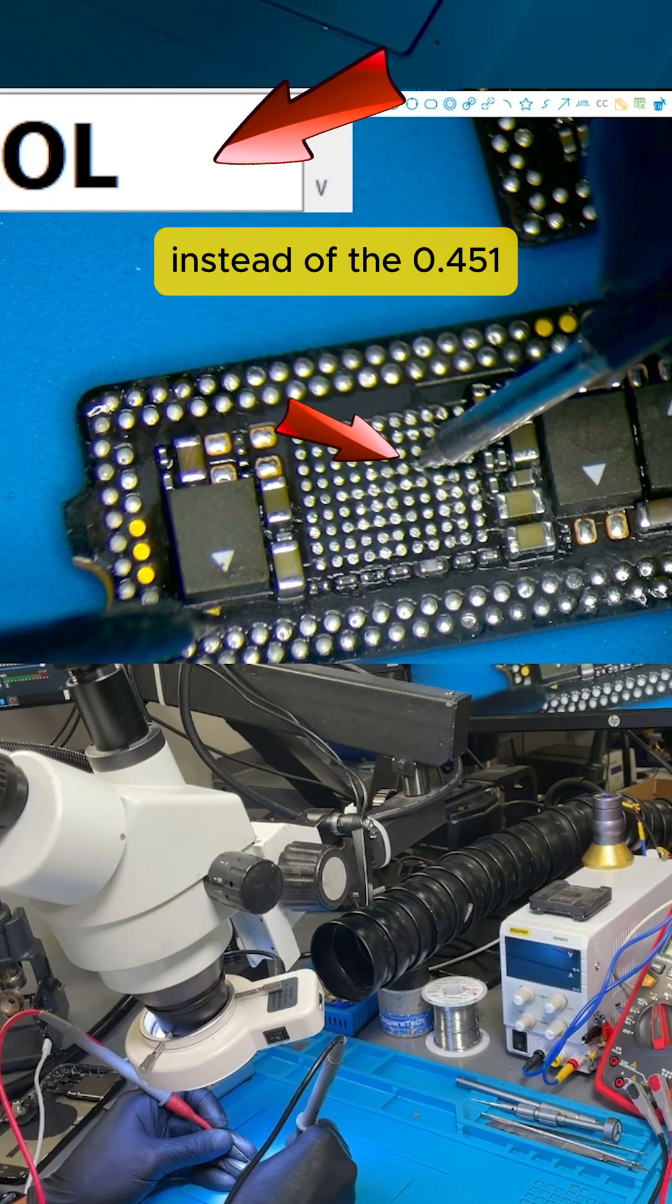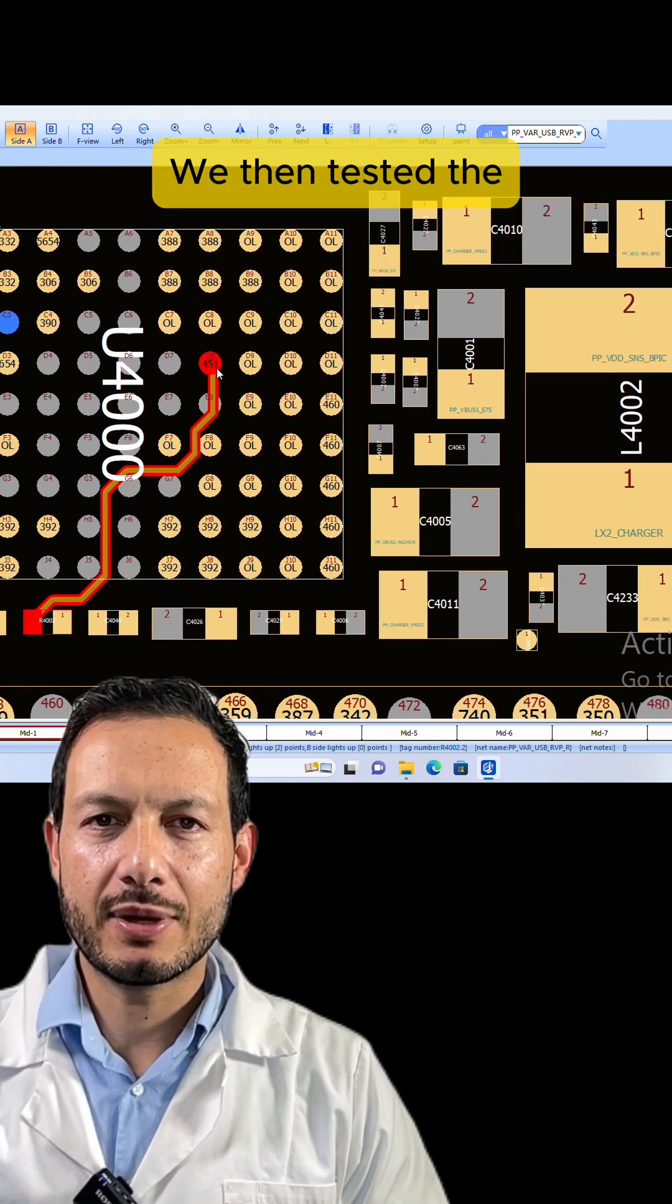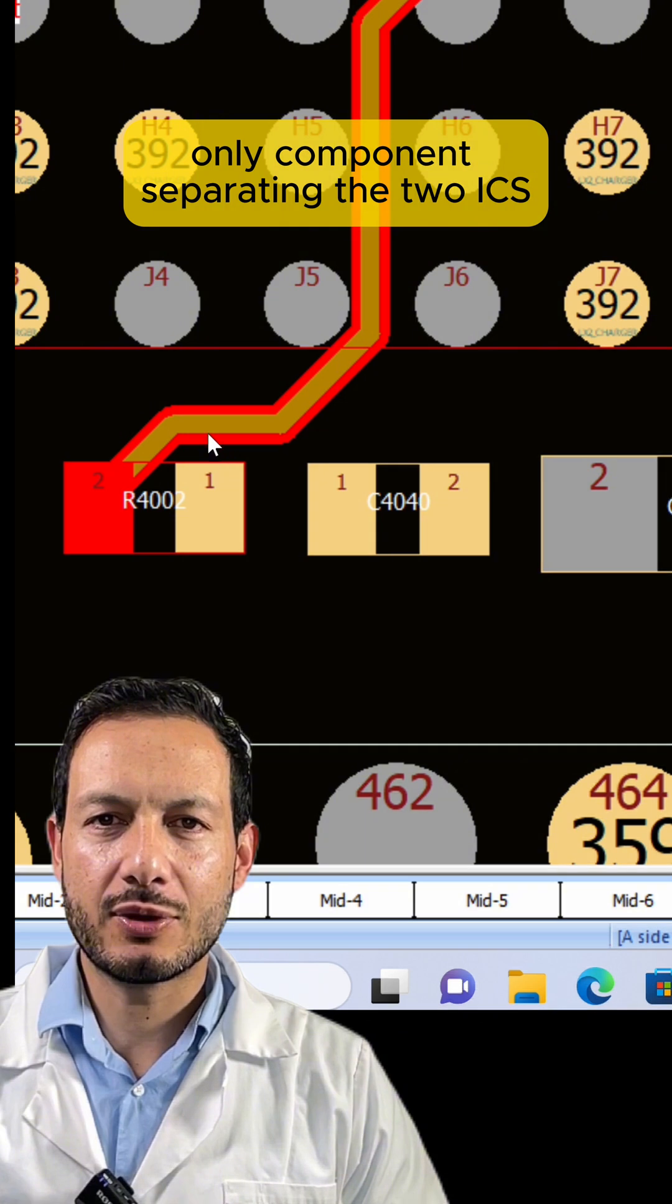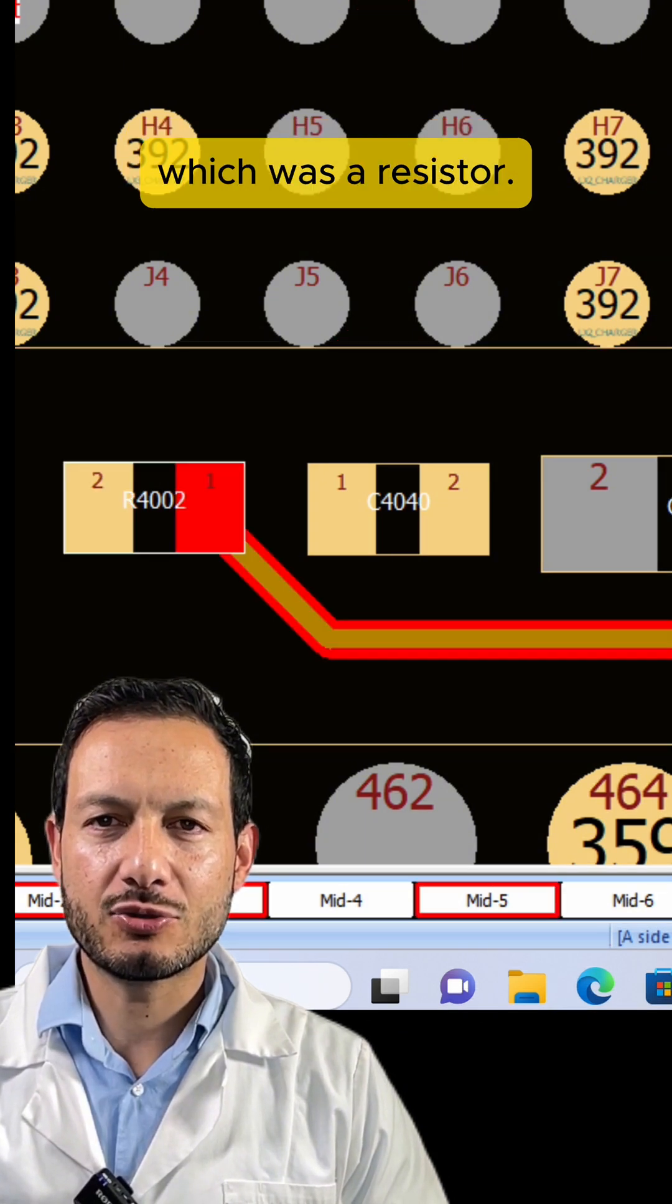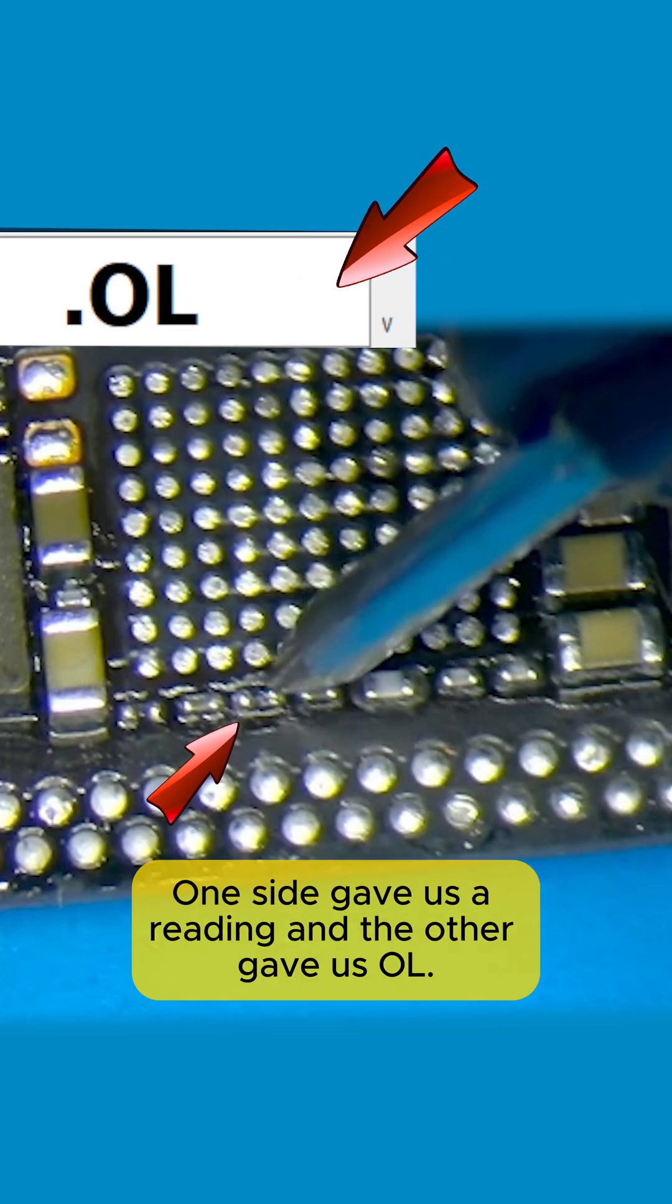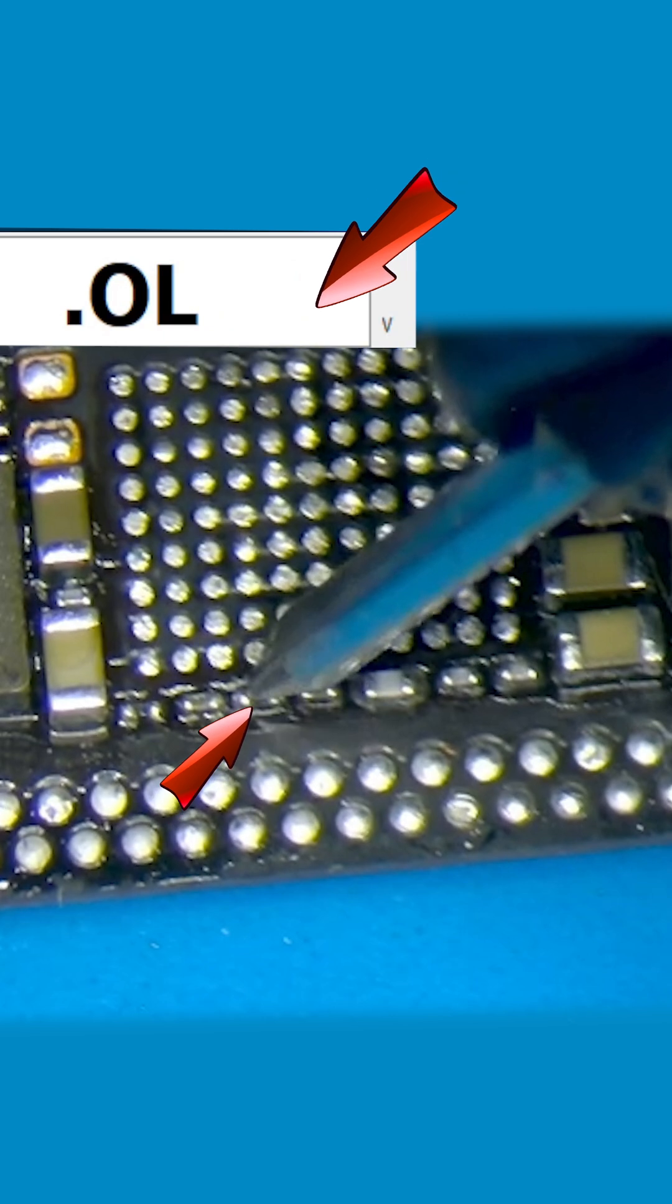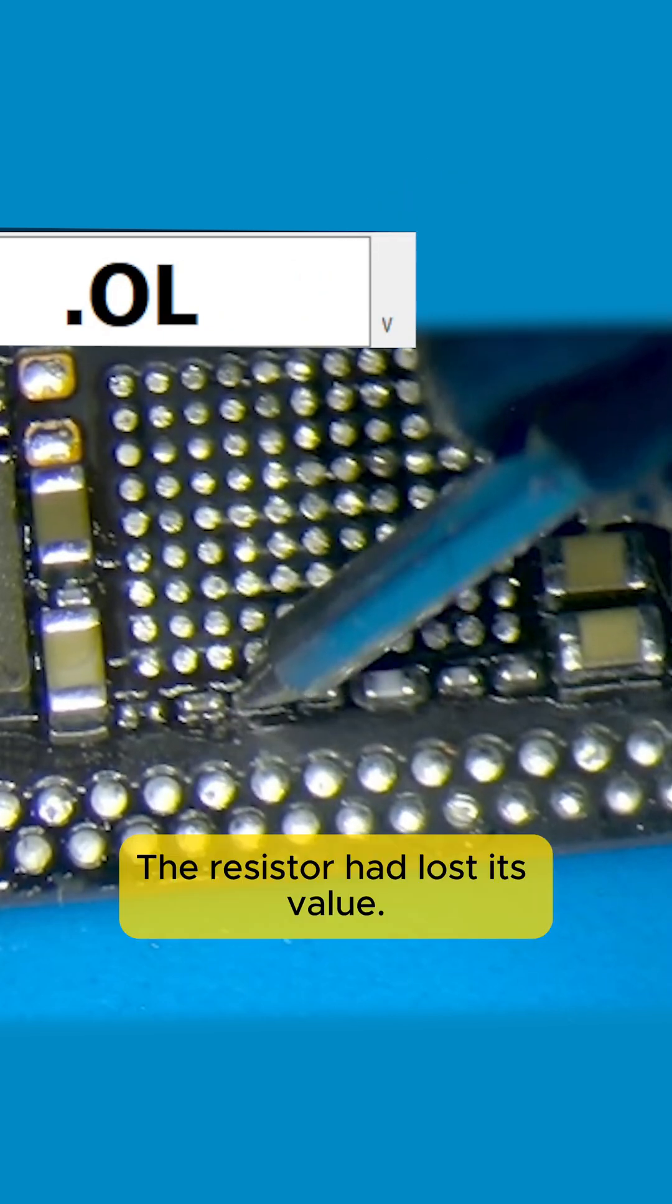We then tested the only component separating the two ICs, which was a resistor. We checked the resistor on both sides. One side gave us a reading, and the other gave us OL, open line. Bingo! The resistor had lost its value.